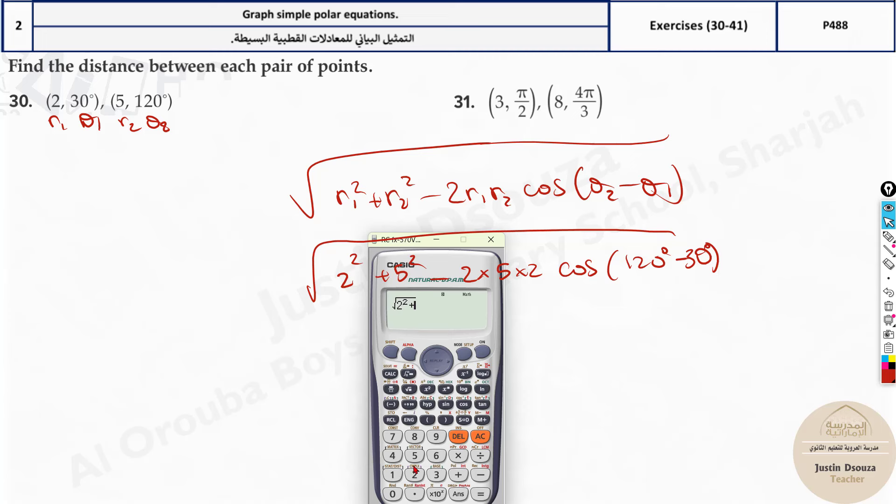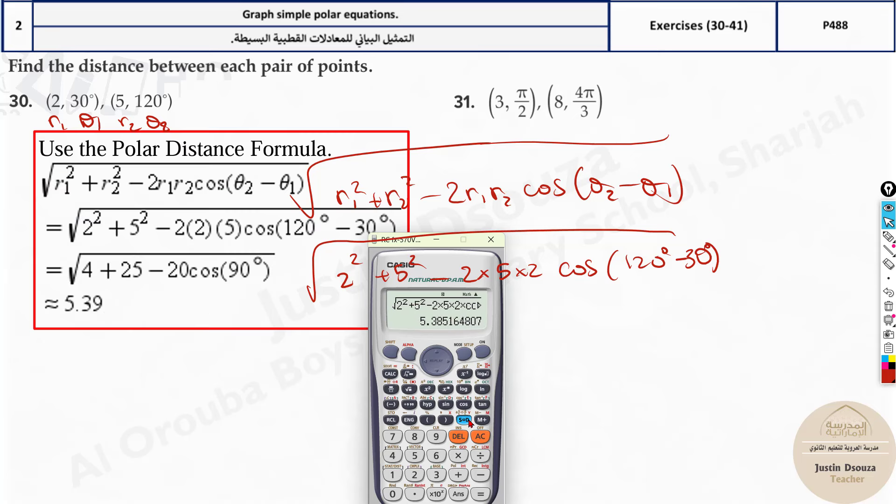2 squared plus 5 squared, sorry, it's minus 2 times 5 times 2 times cos. Now you do not need to make it to radian mode. Keep it in degrees only. The default mode is degree mode because the values are in degrees, right? I'll just put 120 minus 30 in the bracket. The answer is root of 29, or it's 5.385 which becomes 5.39. That's it.